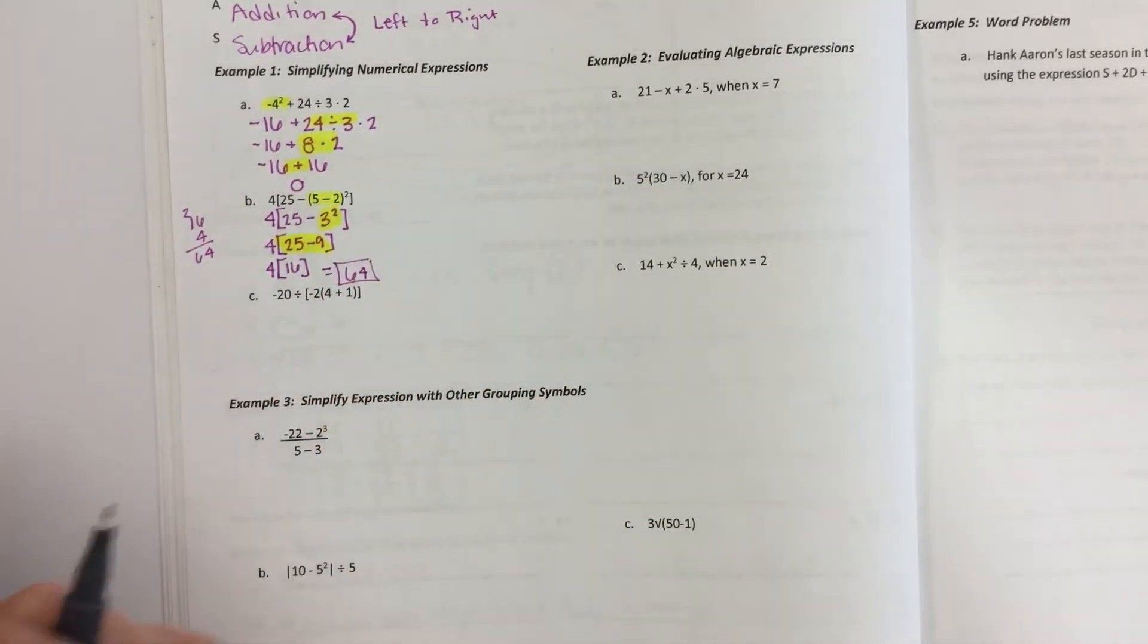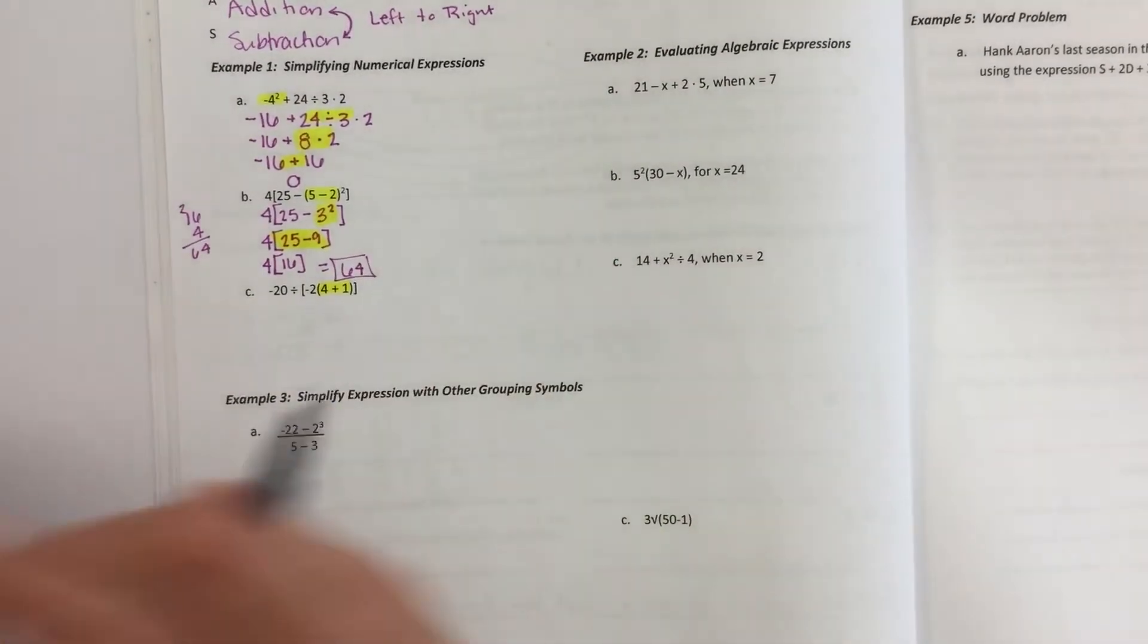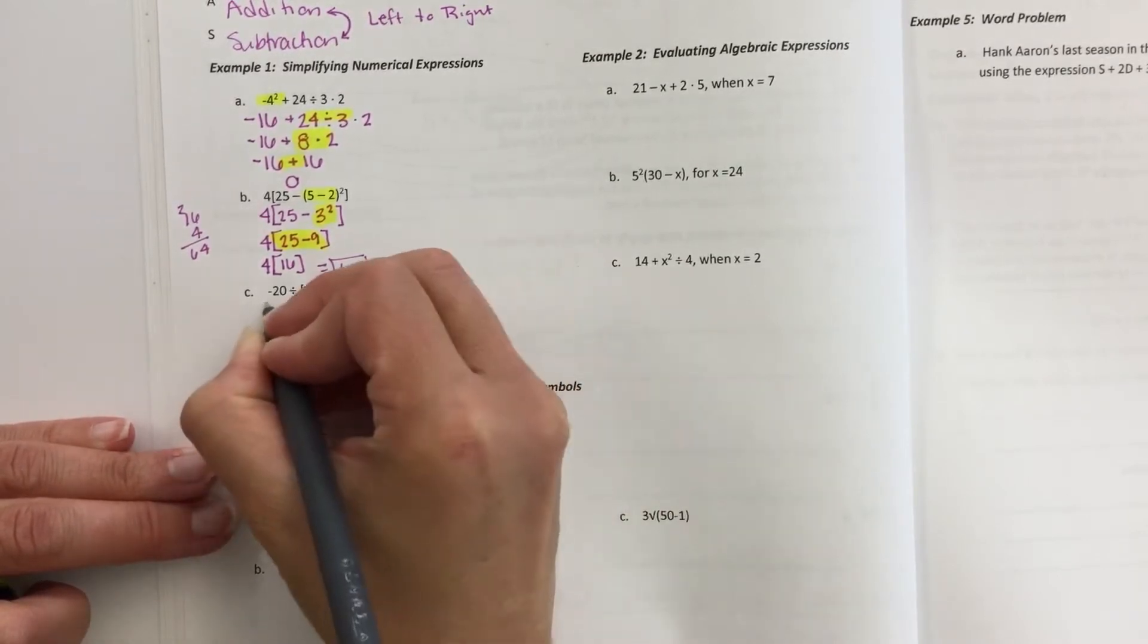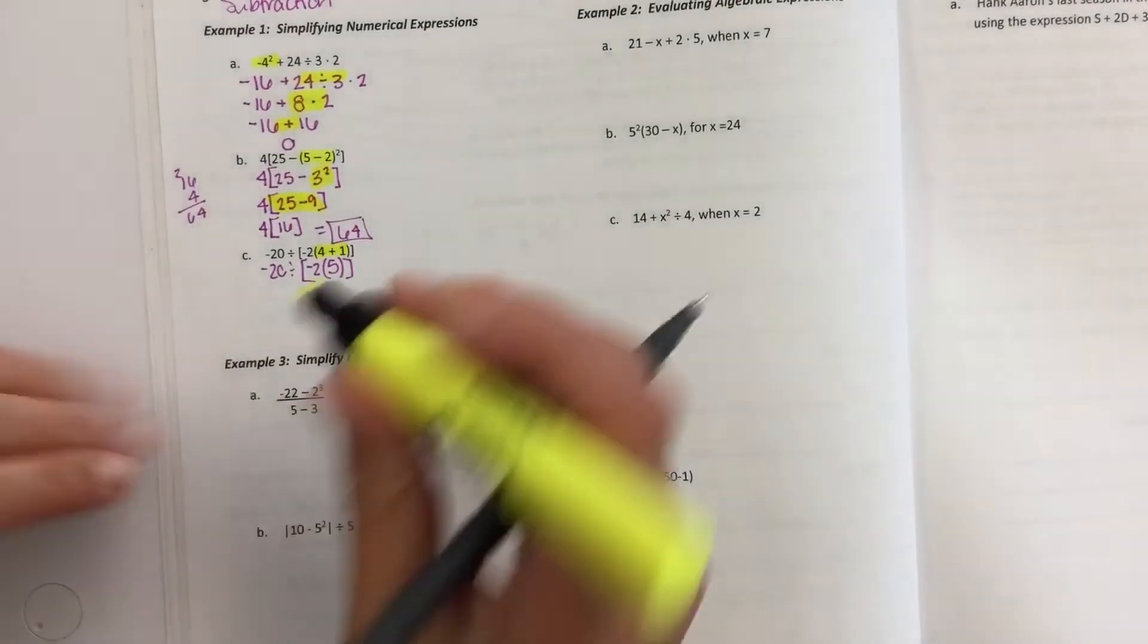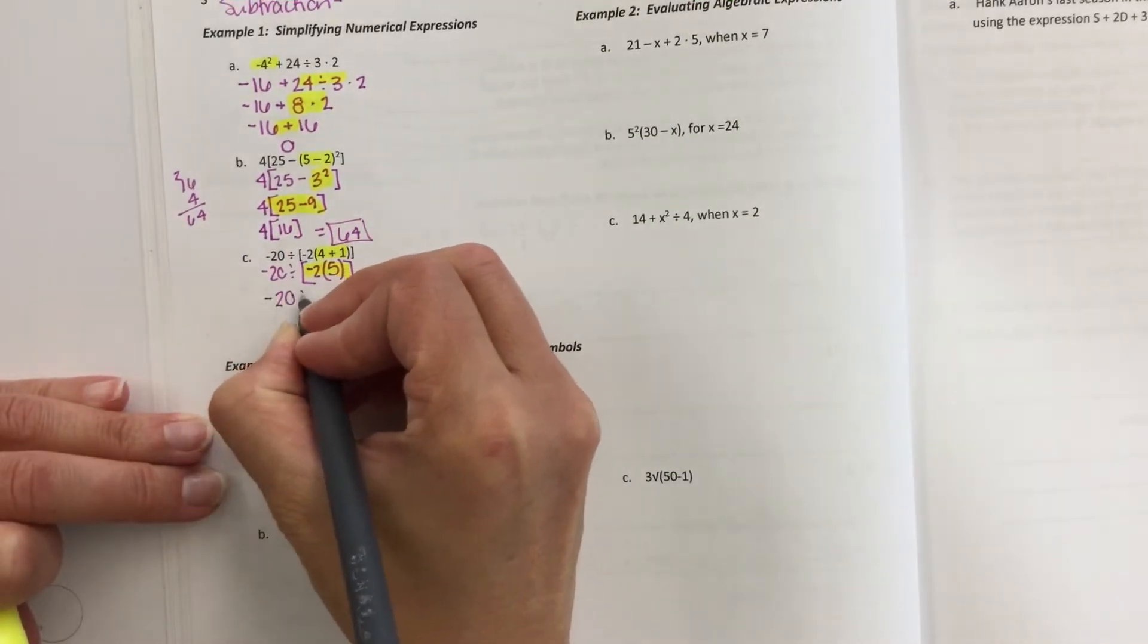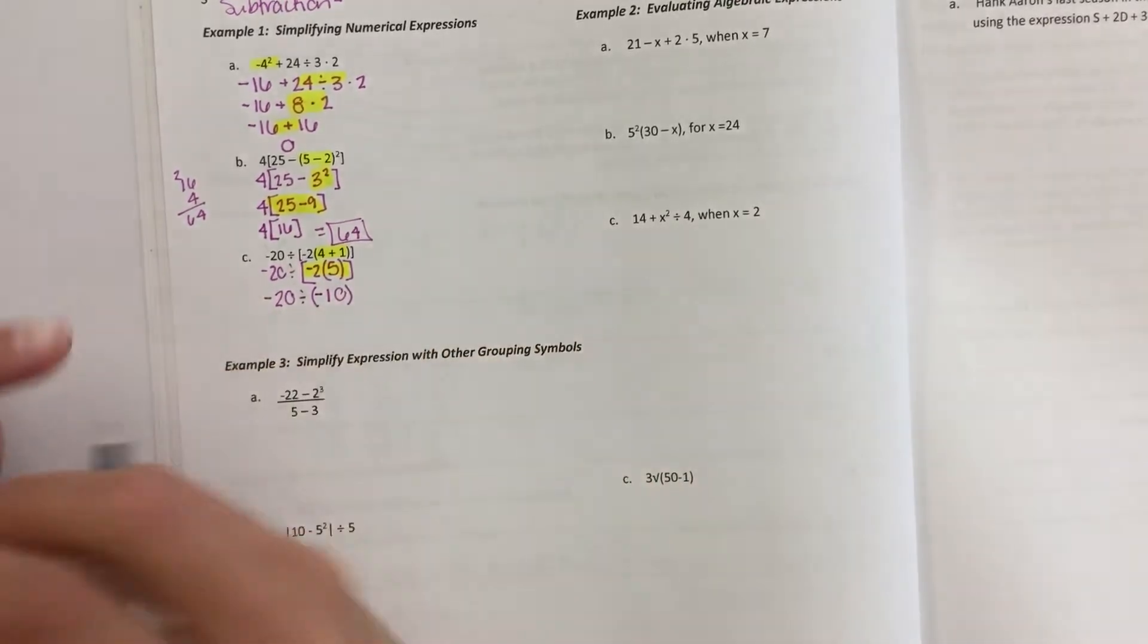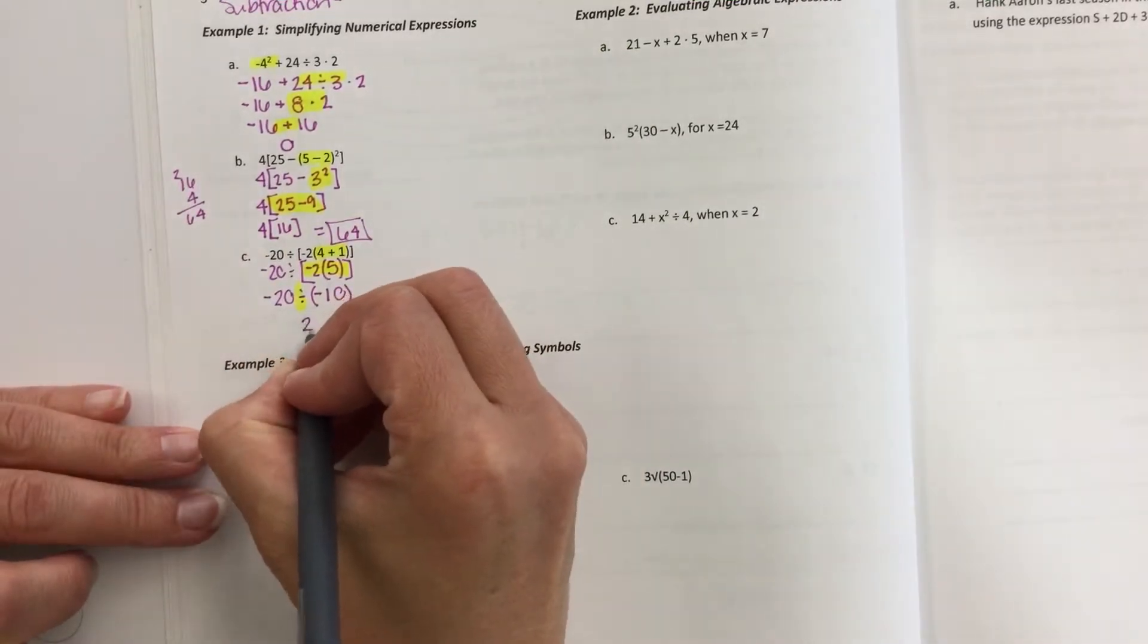Okay. Next one, inside the parentheses first. 4 plus 1 is 5. Okay. Then I do what's inside the bracket. Negative 20 divided by... And then what comes out of this is a negative 10. And then I get a positive 2.